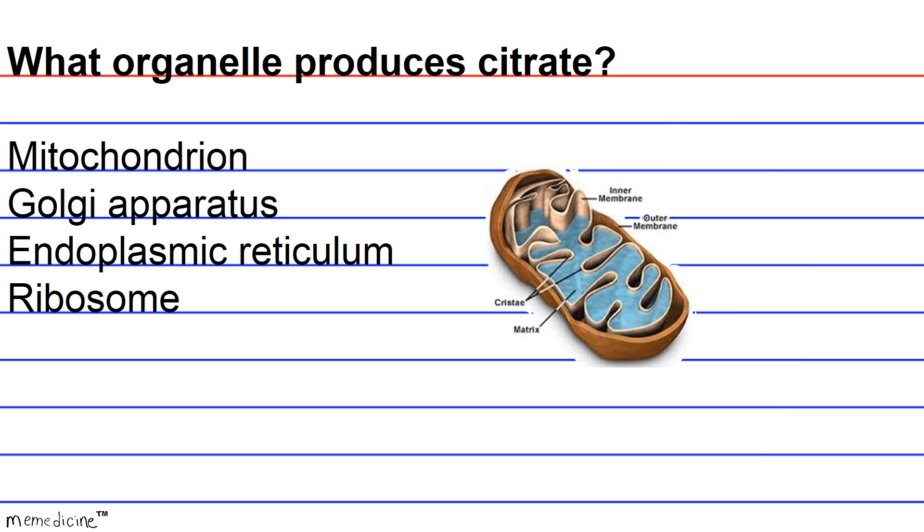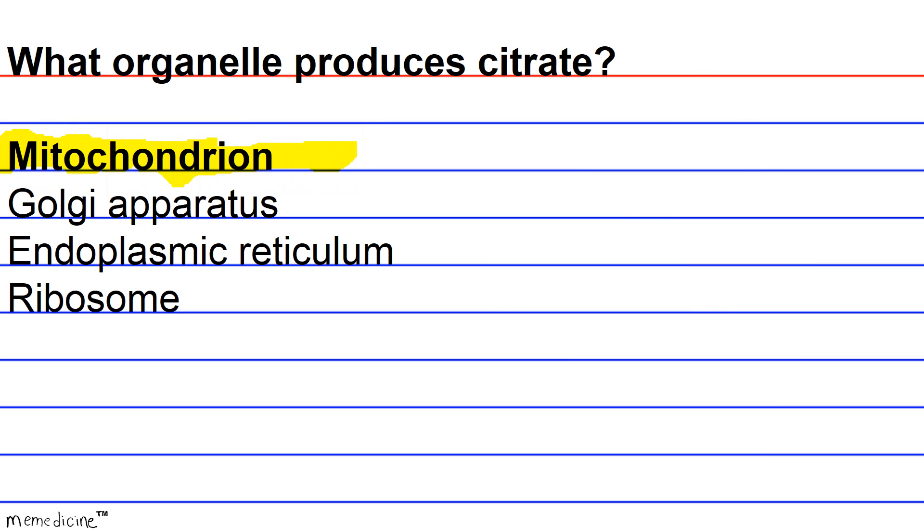Ding, ding, ding. So basically citrate is produced in the mitochondrion. And this was mentioned in the passage.